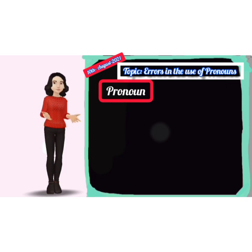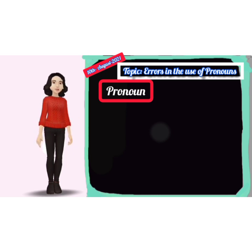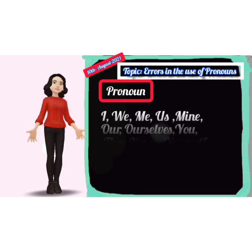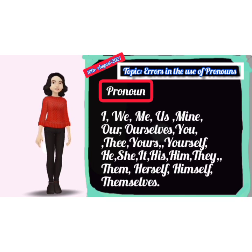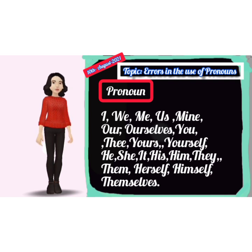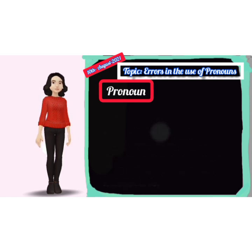Pronouns stand instead of the names of persons. They have different forms according to the person who is supposed to be speaking. For example: I, we, me, us, mine, ourself, you, thee, yourself, himself, themself, herself, them, they, he, she, it, etc.